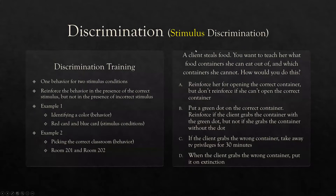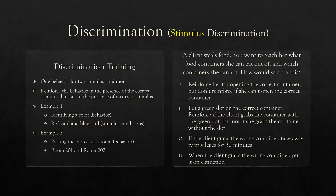Discrimination, also known as stimulus discrimination, involves discrimination training. Simply, you have one behavior in the presence of two stimulus conditions. For example, identifying a color — stimulus conditions might be red card and blue card. If I say point to red card, I'm going to reinforce pointing to red and not blue. That's going to quickly start teaching my client to discriminate between red and blue — they receive reinforcement when touching red, but not blue.